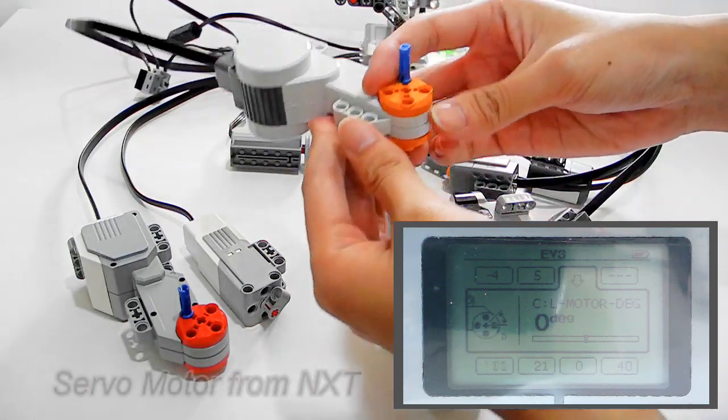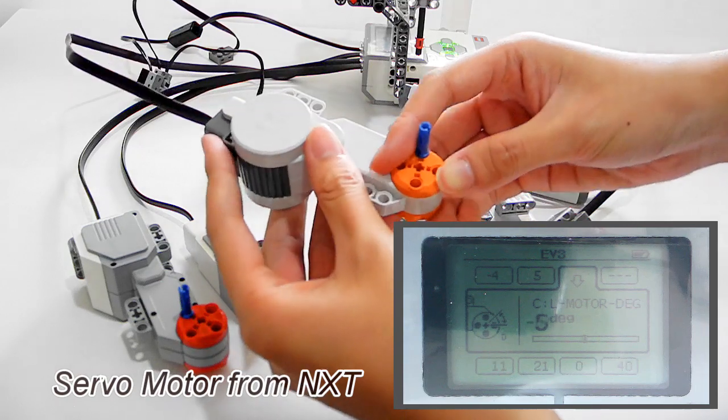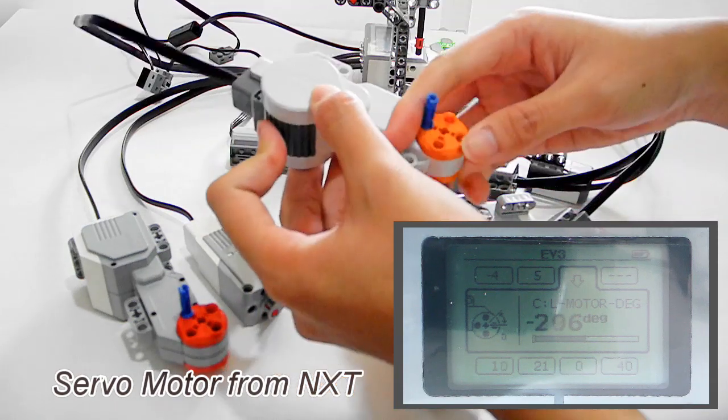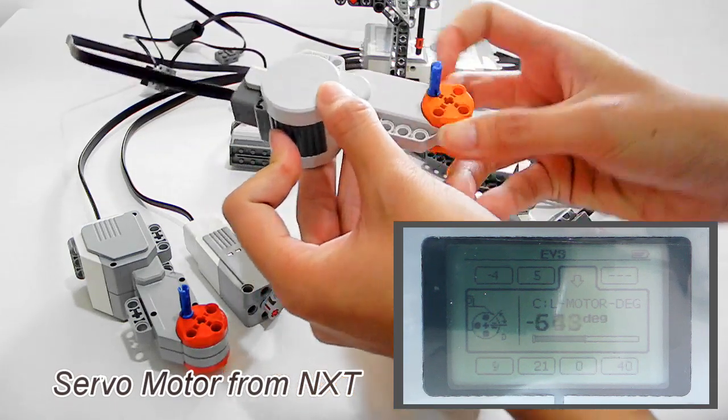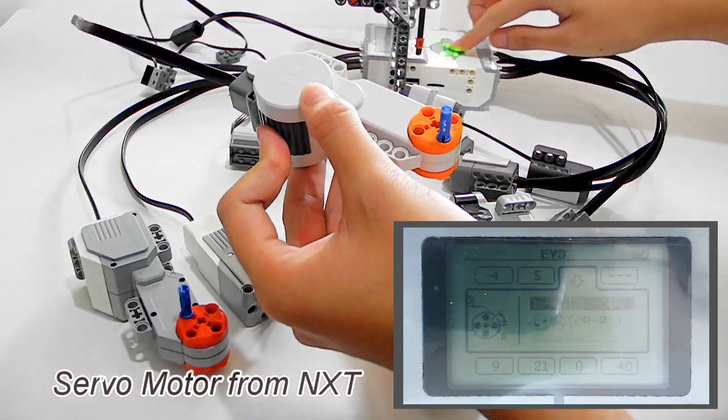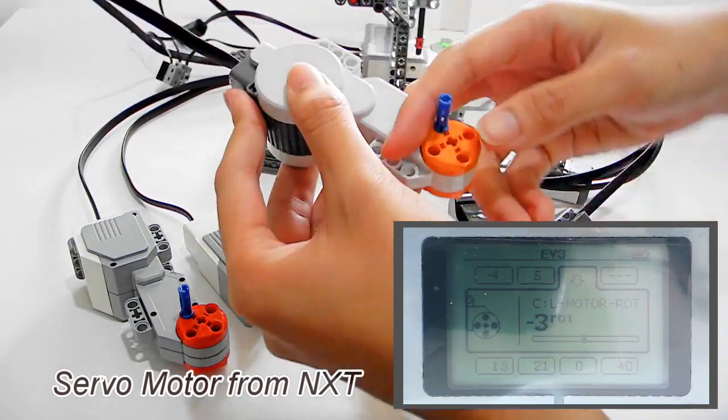And the third one is the NXT Servo motor. The first one is the degrees, and the second one is the number of rotations.